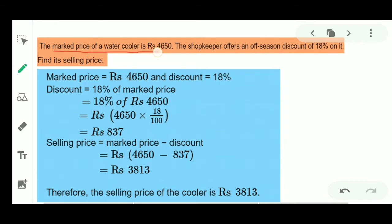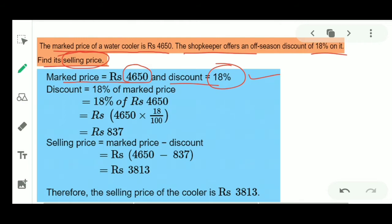Example 1: The mark price of a watercolor set is 4,650. The shopkeeper offers an off-season discount of 18% on it. Find its selling price. Given: Mark Price = 4,650 and Discount = 18%. Discount = 18% of Mark Price = 18% of 4,650.